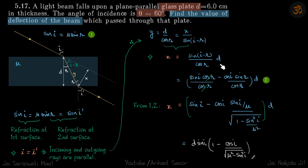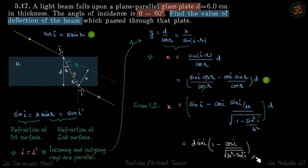Using those two expressions for y and eliminating y, we get x equals d times sine(i minus r) divided by cos r. We don't know r directly, so we expand the bracket. There remains a term sine r over cos r, so we substitute: sine r equals sine i divided by mu, and cos r equals the square root of one minus sine squared r. Simplifying gives us our final answer for x, the deflection by the parallel glass slab.